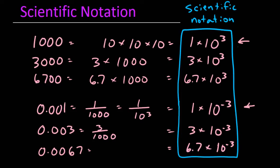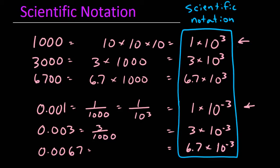Actually, it never quite gets up to 10 — it can get up to 9.999, etc., but never quite 10. The number after the multiplication sign is always written as 10 raised to an integer value. That integer value can either be positive, negative, or 0.